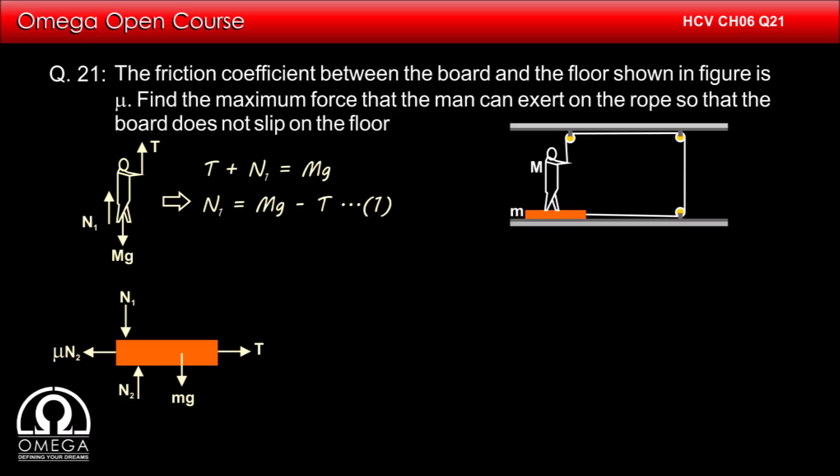Force of friction between the board and the floor will oppose this tension. If the man is applying the maximum possible force, then the tension must be equal to the maximum value of this friction. Therefore, the friction force is equal to mu times the normal between the floor and the board, that is mu N2.